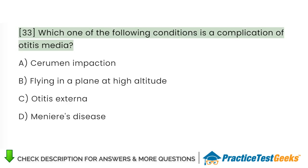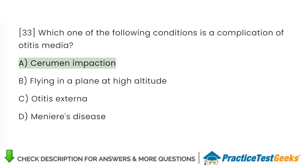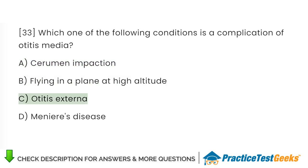Which one of the following conditions is a complication of otitis media? A. Cerumen impaction. B. Flying in a plane at high altitude. C. Otitis externa. D. Meniere's disease.